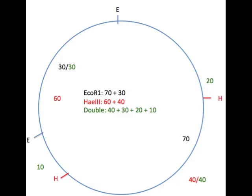Now we have, reading clockwise, 20, 40, 10, and 30 kb fragments from the double digest. And, our HAE single digest fragments are 40 and 60 kb in size.